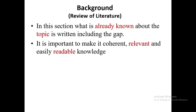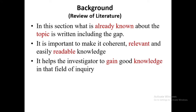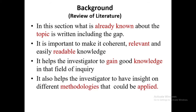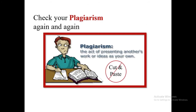Background review of literature: in this section, what is already known about the topic is written, including the gap in knowledge. It is important to make it coherent, relevant, and easily readable. It helps the investigator gain good knowledge in the field and insight into different methodologies that could be applied. Check your plagiarism using tools like Turnitin, which is an authentic one. Plagiarism is a very detailed topic I can explain separately.